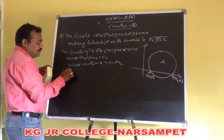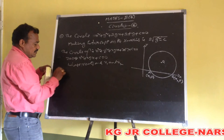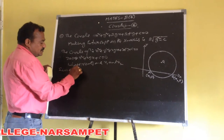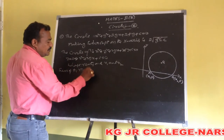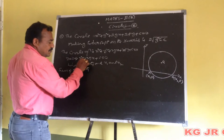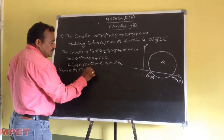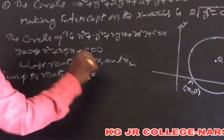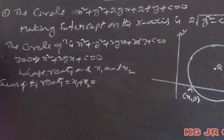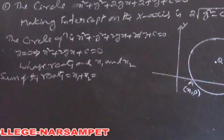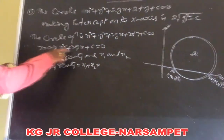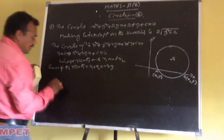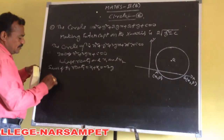Writing this: the sum of the roots of this quadratic equation is given by x1 plus x2 is equal to minus (coefficient of x) divided by (coefficient of x square), which equals minus 2g.